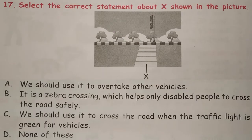Select the correct statement about the image shown in the picture. Answer is option D because the image shown in the picture is a zebra crossing. From here people can cross the road safely. We should use it to cross the road when the traffic light is red for vehicles. So the answer is option D.